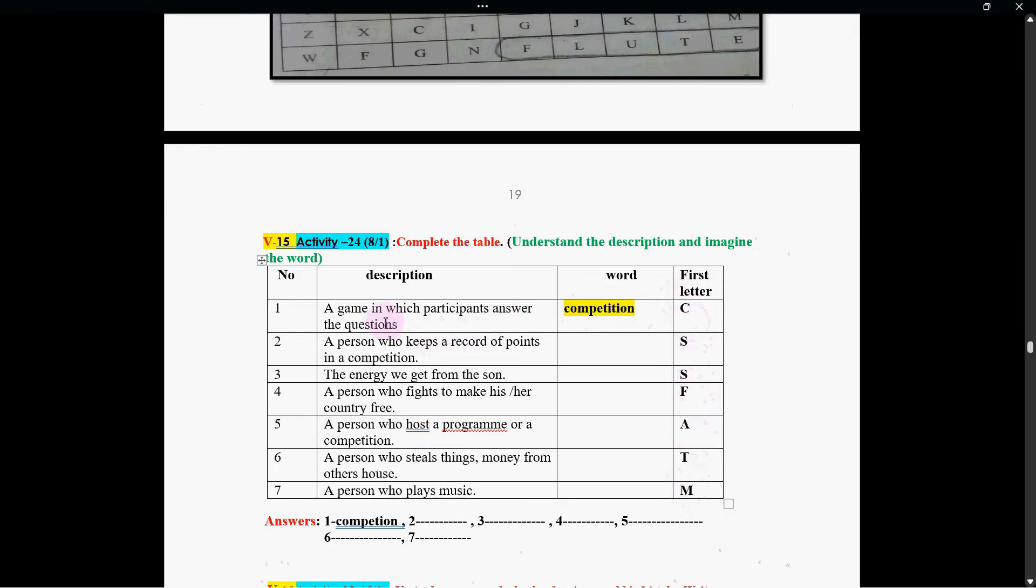For example, a game in which participants answer the questions. It starts with C, so the word is competition. Number two, a person who keeps record of points in a competition. It starts with S. So the word that you can write is scorekeeper. You can write in the box. Number one, competition. Number two, scorekeeper. Do this activity in five minutes.